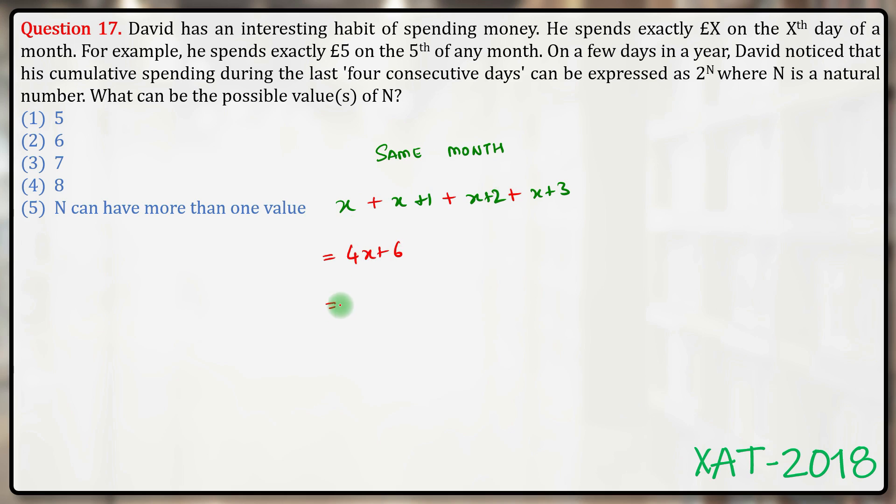which is twice of 2x+3. But here we hit a snag because 2x+3 is an odd number, and two times any odd number cannot be equal to a power of 2, except when the